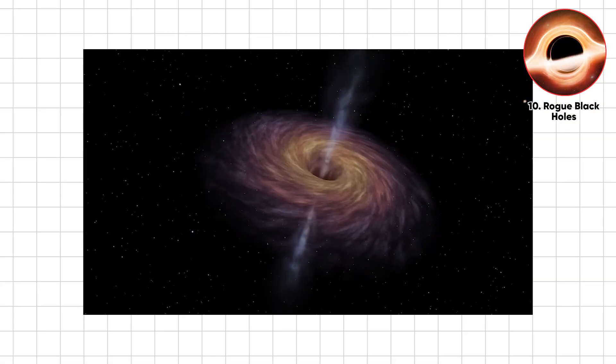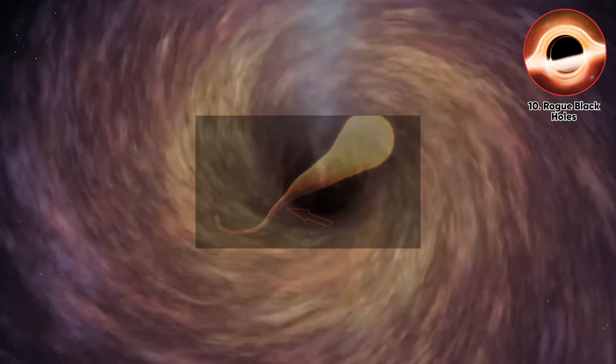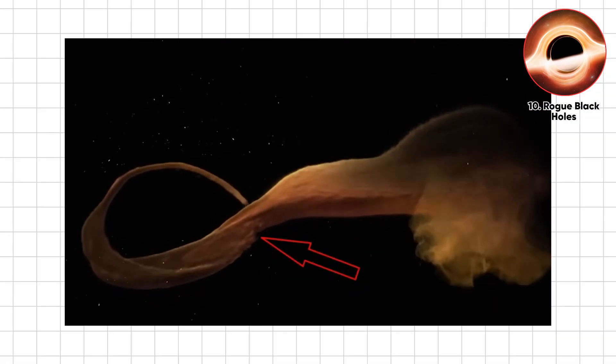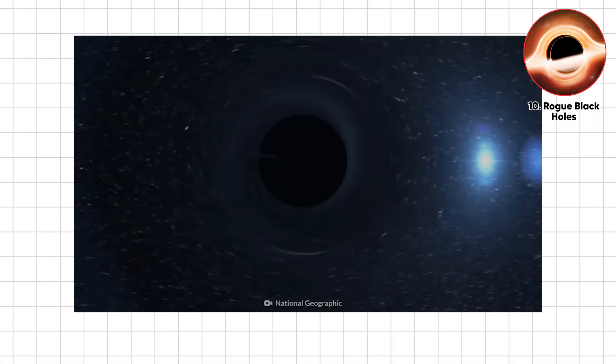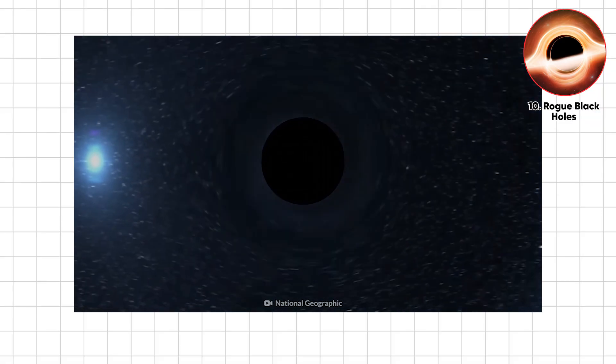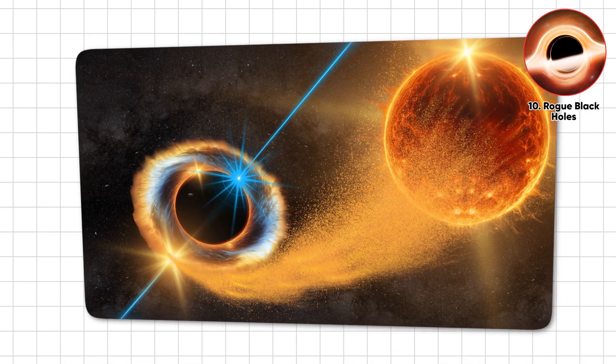If one drifts into your neighborhood, it could unravel planetary orbits, consume matter, and annihilate entire star systems faster than you can say black hole vacuum. Millions could be lurking unnoticed, shadows in the dark patiently waiting for their next cosmic snack.